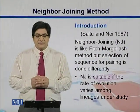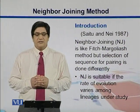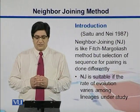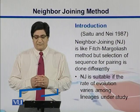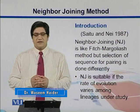The Neighbor Joining method, commonly called NJ, was presented by Saitu and Nei in 1987. It's like the Fitch-Margoliash method, but the selection of the sequences is different.